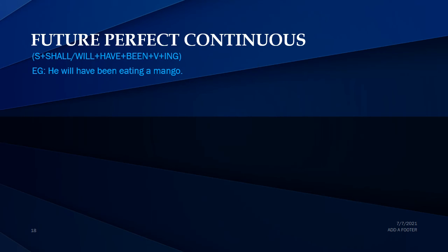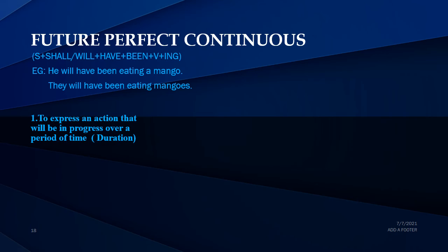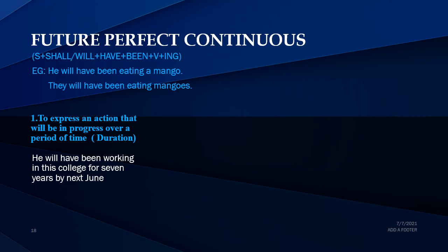The next tense is future perfect continuous tense. It is in the format: subject plus 'shall/will' plus 'have been' plus verb plus -ing. For example: 'He will have been eating mangoes', 'They will have been eating mangoes'. This tense is used to express an action that will be in progress over a period of time — to indicate duration. For example: 'He will have been working in this college for seven years by next June'.